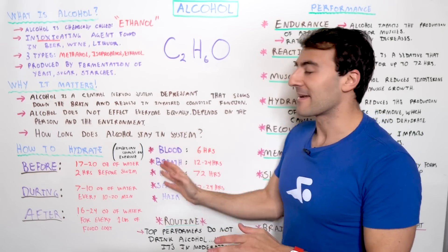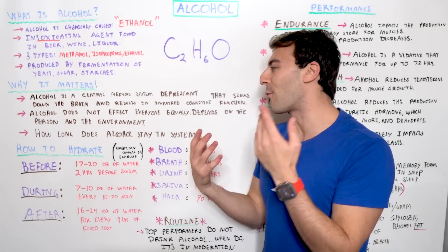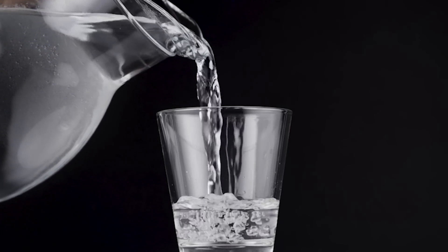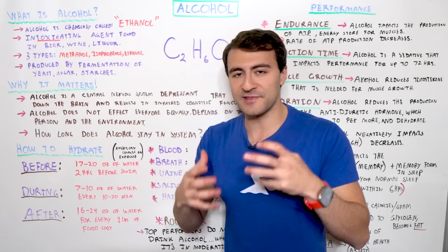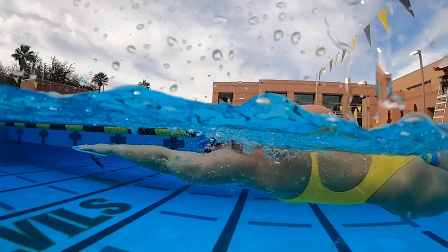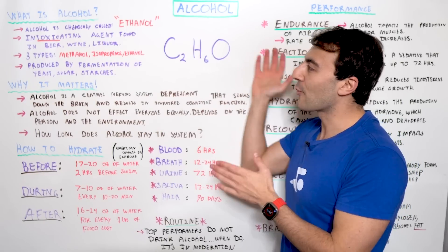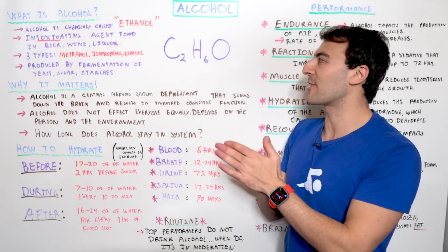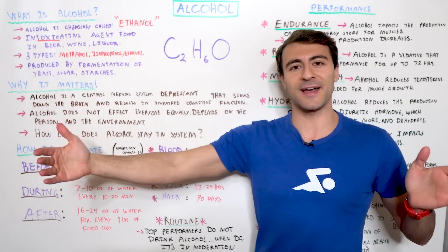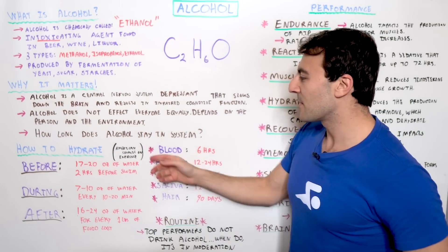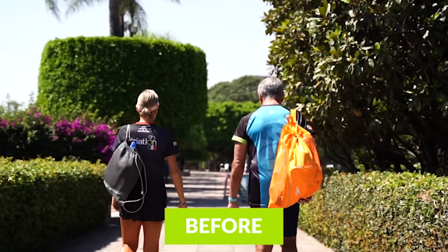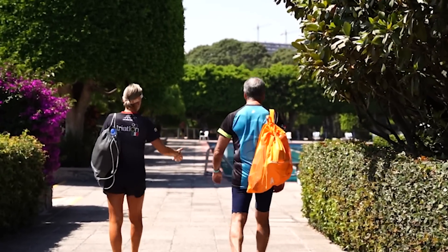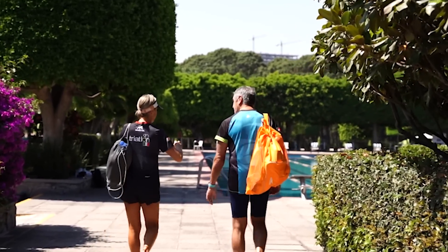Now let's talk about hydration — not alcohol hydration. We're talking about water and other things that really hydrate your body. This is according to the American Council on Exercise. You should have 17 to 20 ounces of water two hours before your swim or exercise, whatever you may be doing.